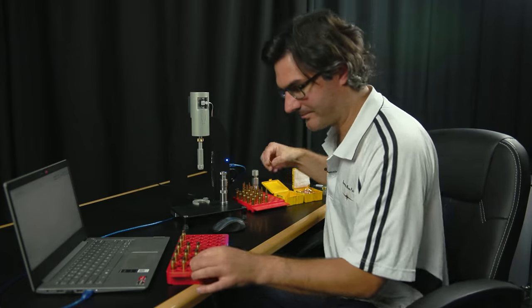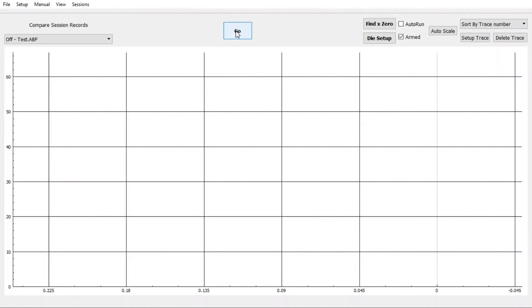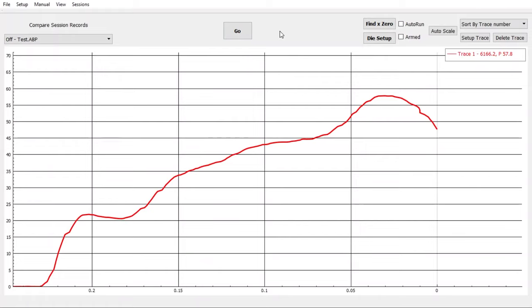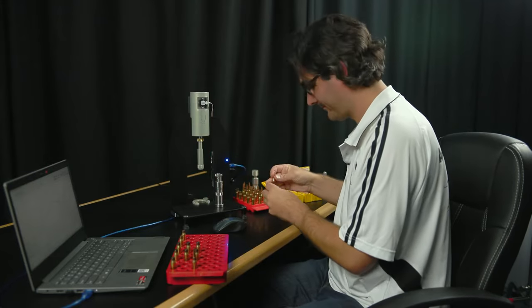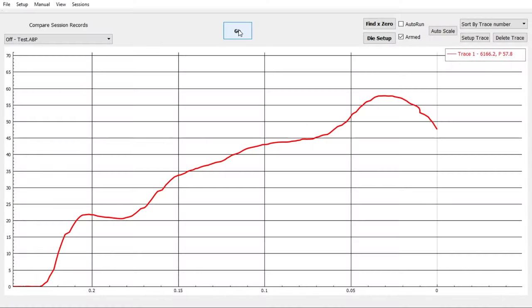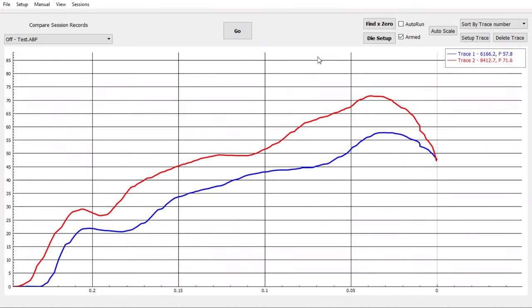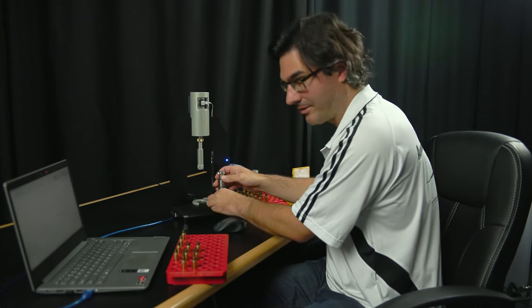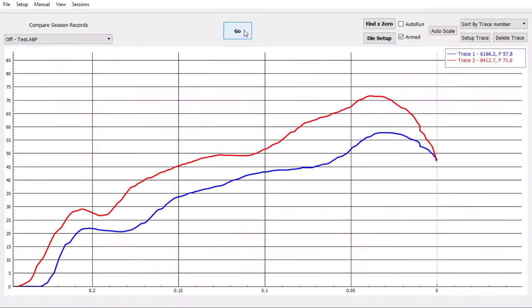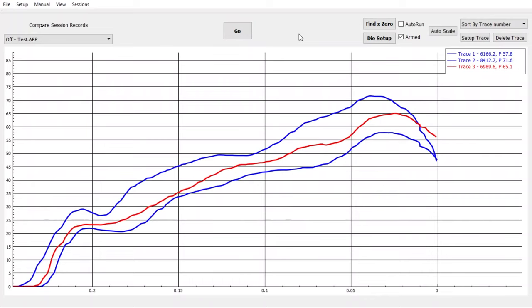We're going to take the first one. We're all ready to go and just seat that one. We've got a rather interesting plot there. Take that out. Seat the next one. A lot of variation already. These don't have powder in them, they're just dummy rounds. We've got three traces there which show quite a bit of variation.